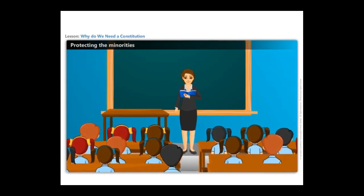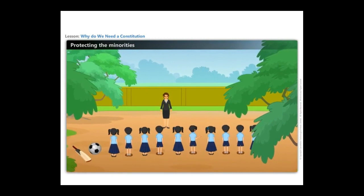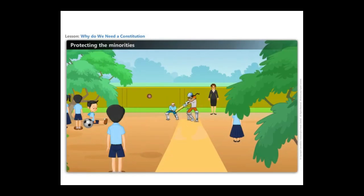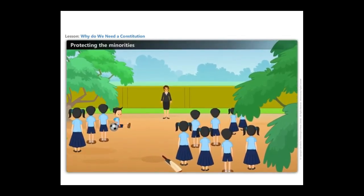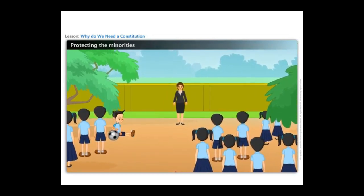The class teacher of class 8A takes the students to the playground, but some students started arguing with each other for playing cricket instead of football. The class teacher decides to settle the problem with a show of hands. The decision goes for cricket as there are more kids in the class who play cricket. The boys and girls who opt for football are disappointed and are always deprived from practicing as they are fewer in number. The students playing football are in the minority group, and the teacher could have solved the problem by dividing the time for both cricket and football.